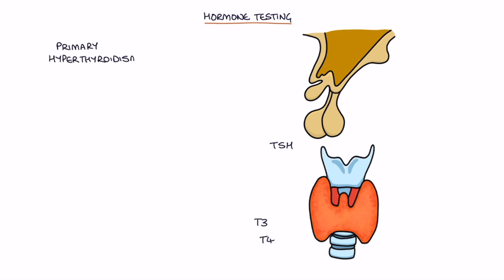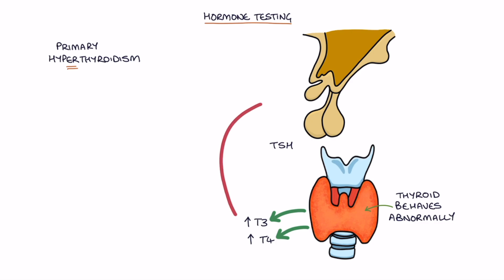Primary hyperthyroidism is when the thyroid behaves abnormally and produces excessive thyroid hormones. The high levels of T3 and T4 suppress the release of TSH, causing a low TSH level. This means primary hyperthyroidism causes a high T3 and T4 and a low TSH.